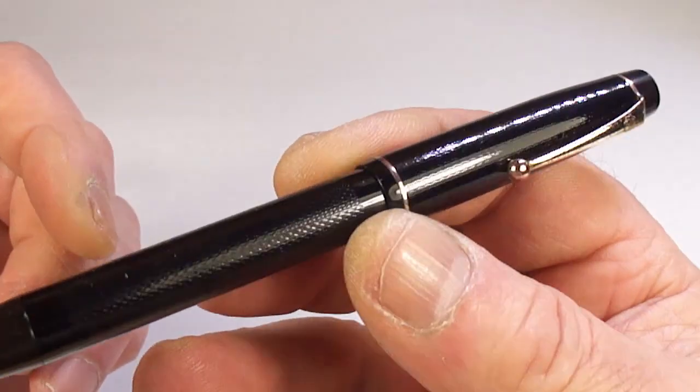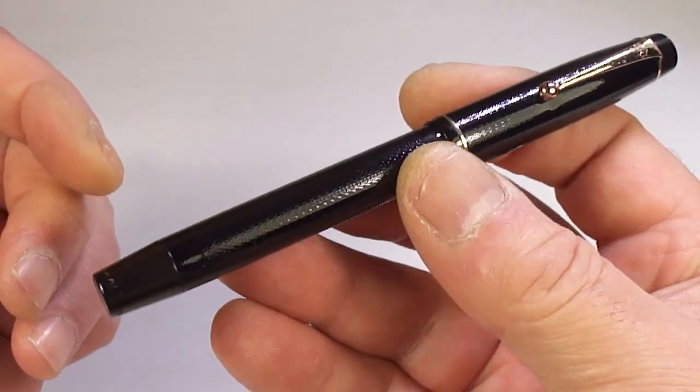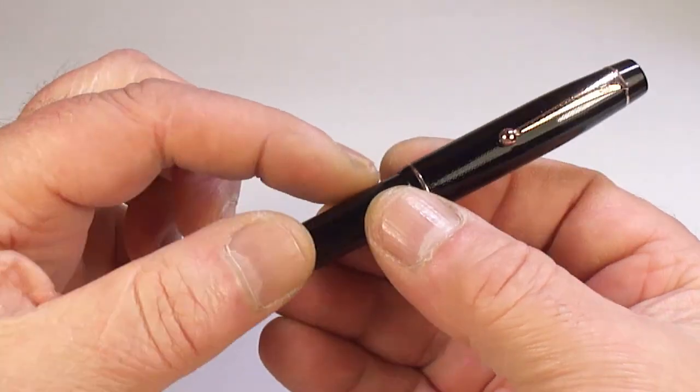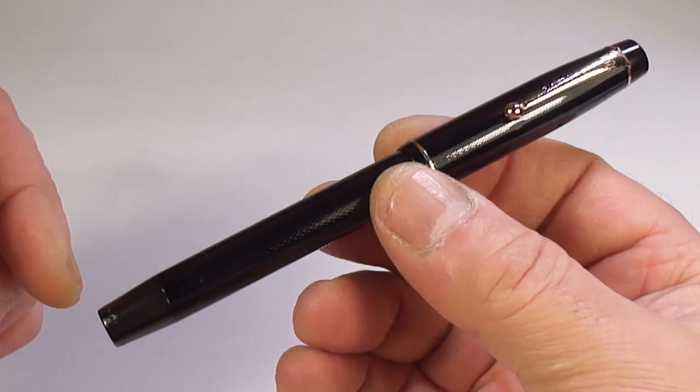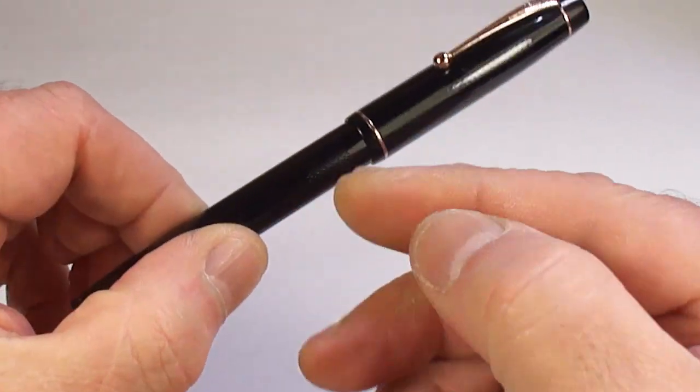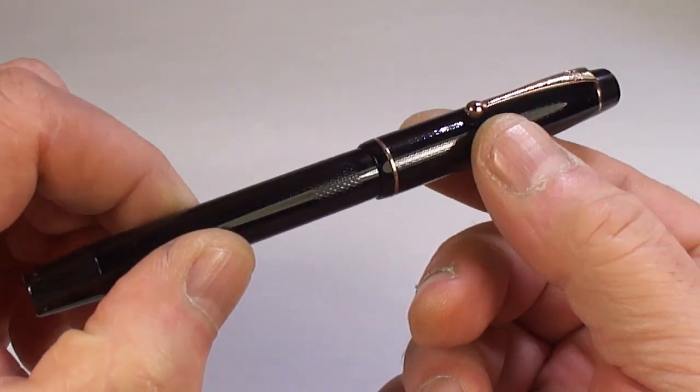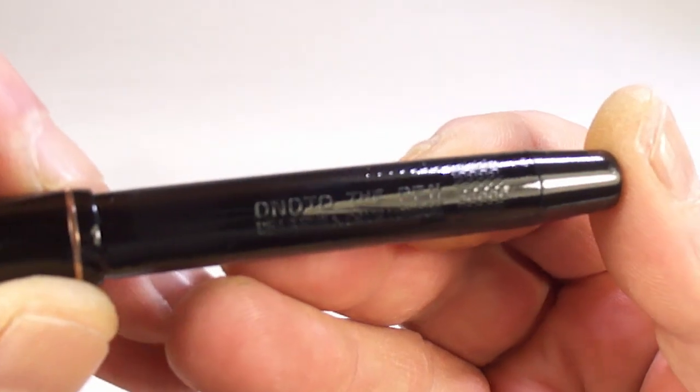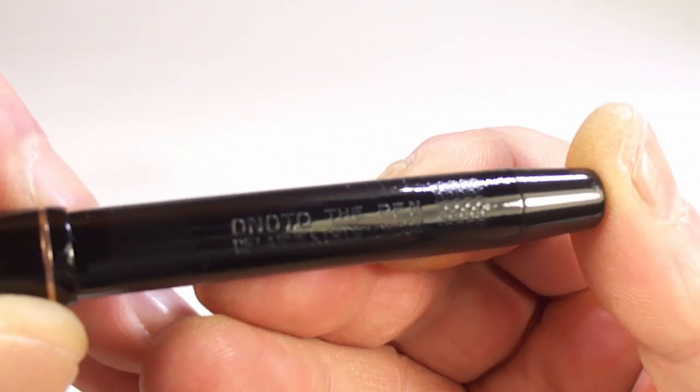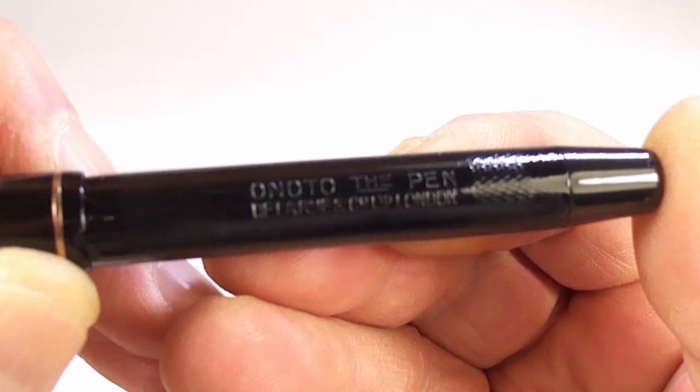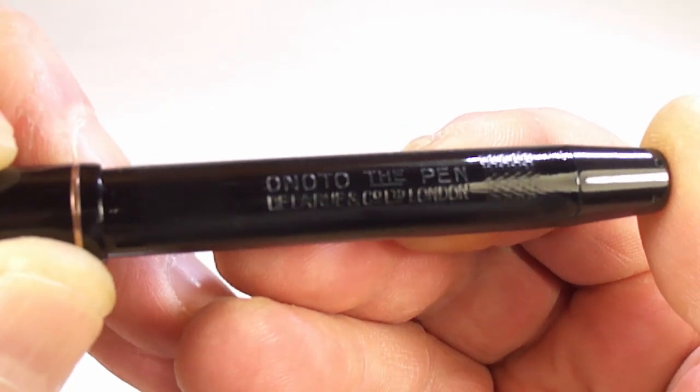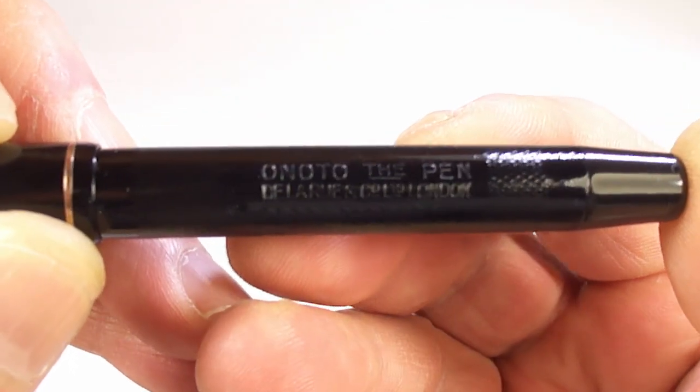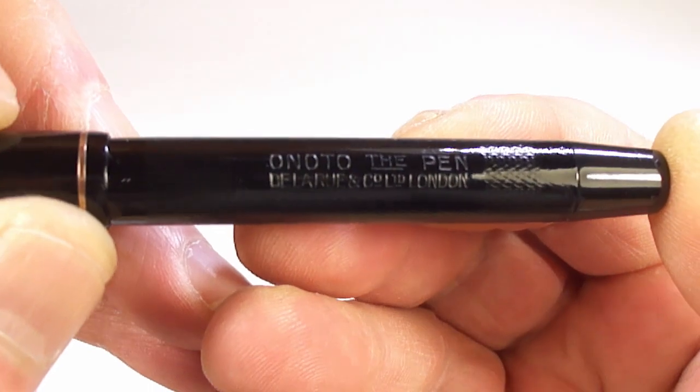So, yeah, you can understand if the chasing is a little bit worn if it's a used pen, but a lovely, lovely pen. The size of it capped is 135mm. Around the barrel, it's a nice 11mm in diameter. Now, let's show you the barrel imprint there. Lovely and clear. It says Onotto the pen, Delarue and Company Limited, London.